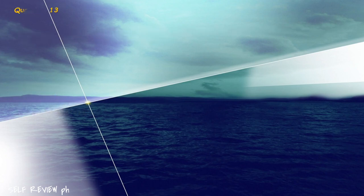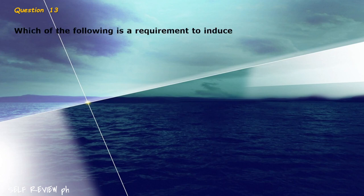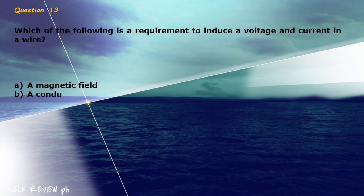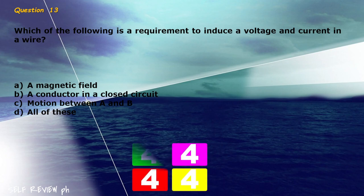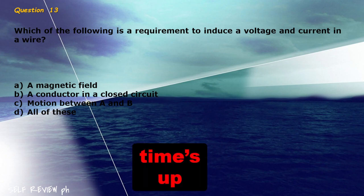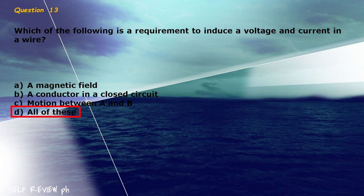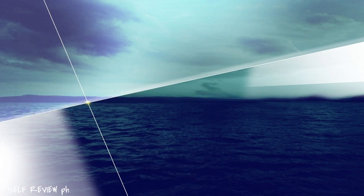Question 13: Which of the following is a requirement to induce a voltage and current in a wire? A) a magnetic field, B) a conductor in a closed circuit, C) motion between A and B, D) all of these. The correct answer is letter D, all of these.